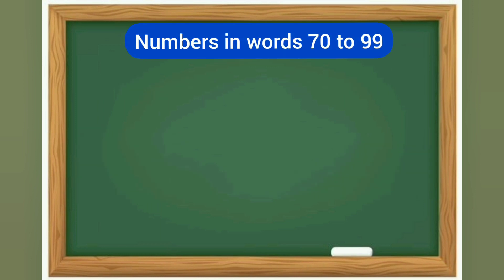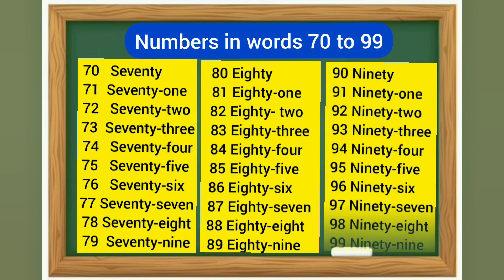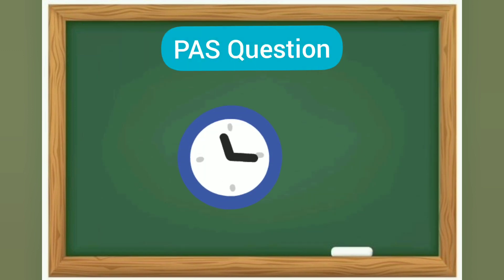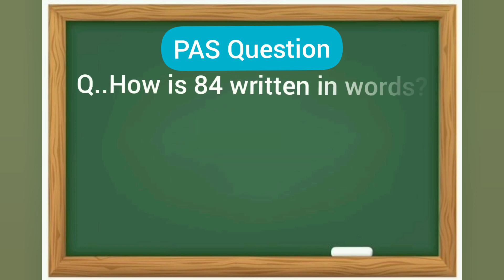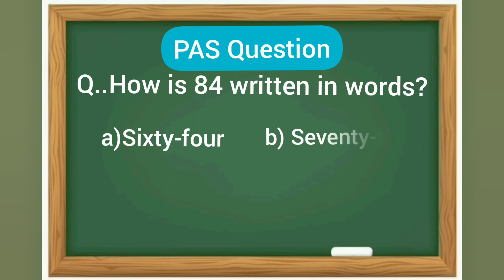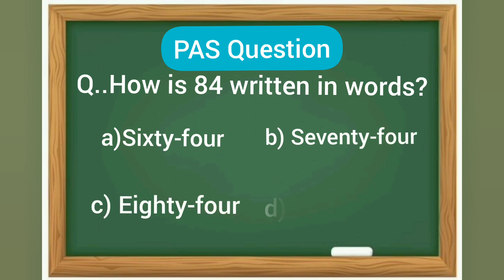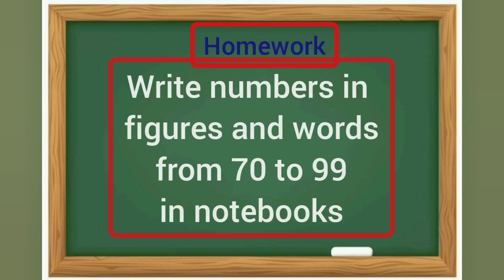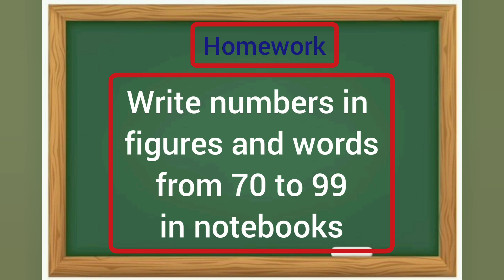So students, today we have learnt numbers in words from 70 to 99. Now it's time for a past question. The question is: how is 84 written in words? A: 64, B: 74, C: 84, D: 94. The right answer is option C, 84. It's time for homework now. Students, write numbers in figures and words from 70 to 99 in your notebooks. Thanks.